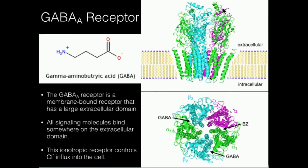It's a membrane protein, and GABA binds somewhere on the extracellular domain. You can see it right here — this is actually looking at it from the top, and you can see GABA binds right here. There's also another binding site here labeled BZ. What is that? That's not GABA — that's actually a benzodiazepine, like Xanax or flunitrazepam. You've probably also heard of Valium, which is also a benzodiazepine.